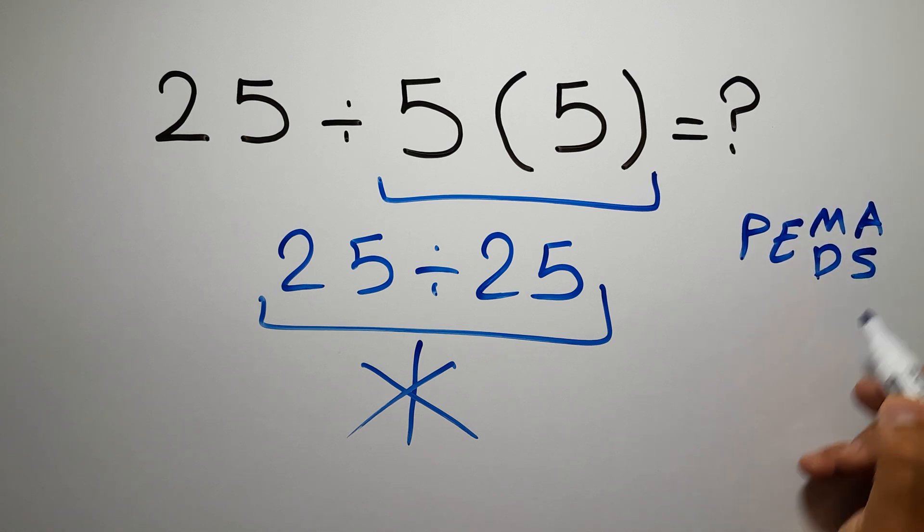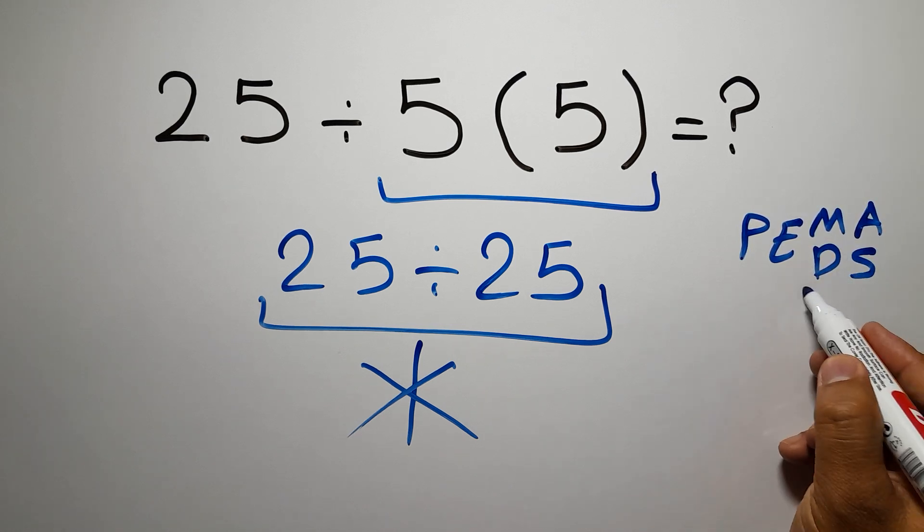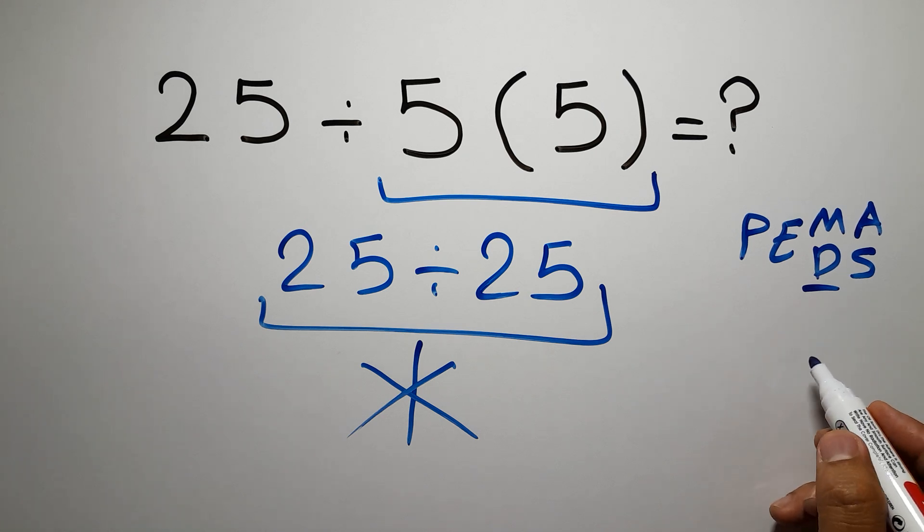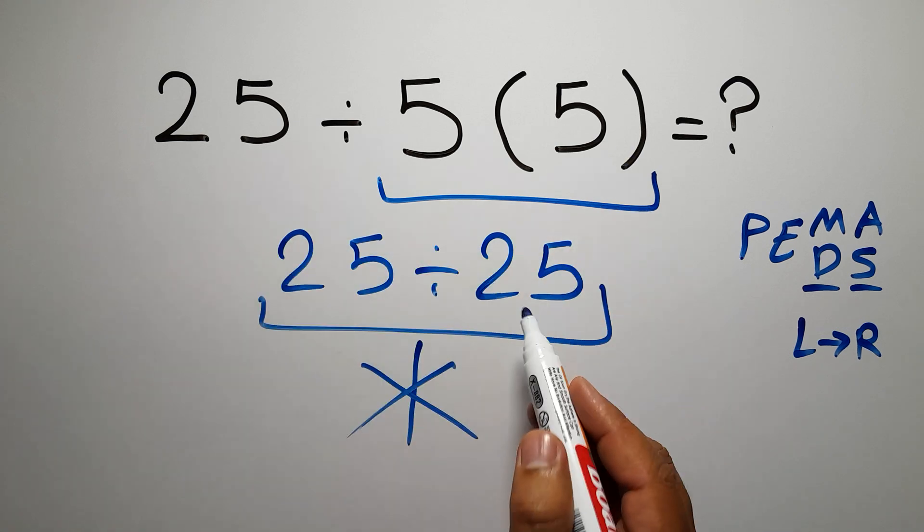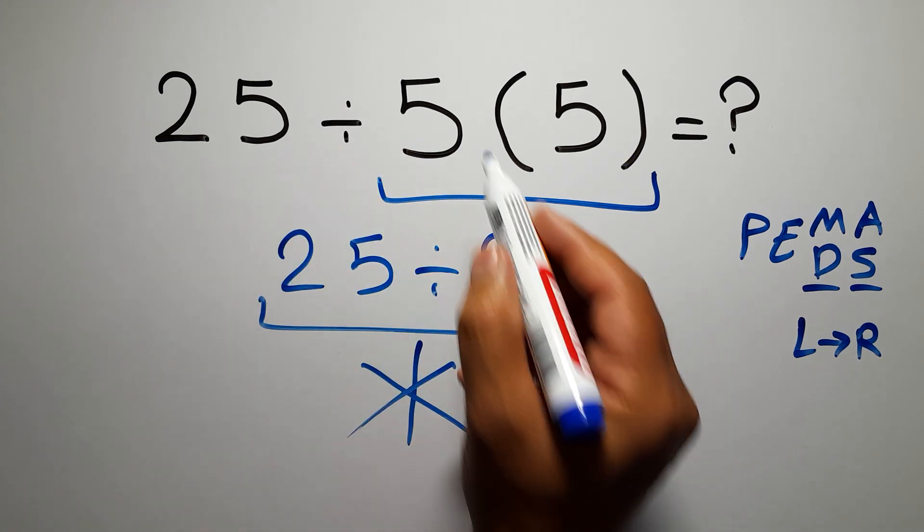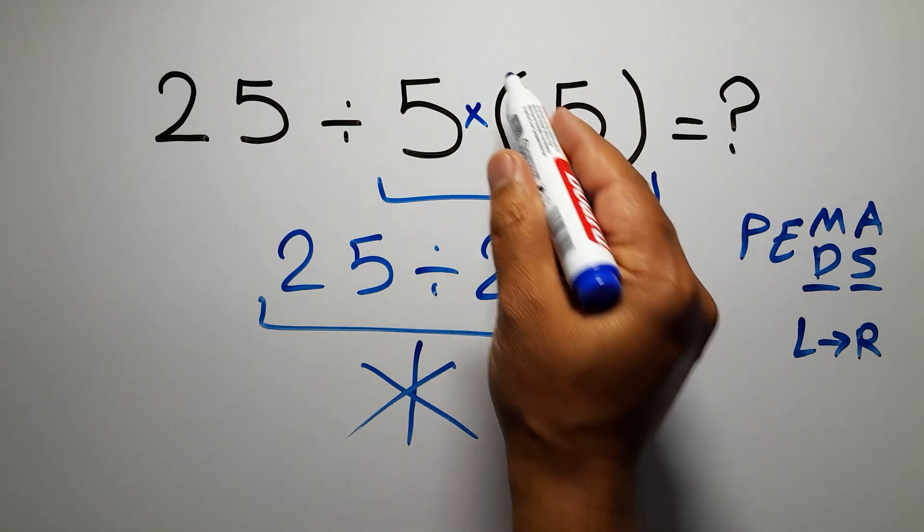finally addition or subtraction. Remember that multiplication and division have equal priority and we have to work from left to right, and the same applies to addition and subtraction. In this expression we have one division, one multiplication, and this